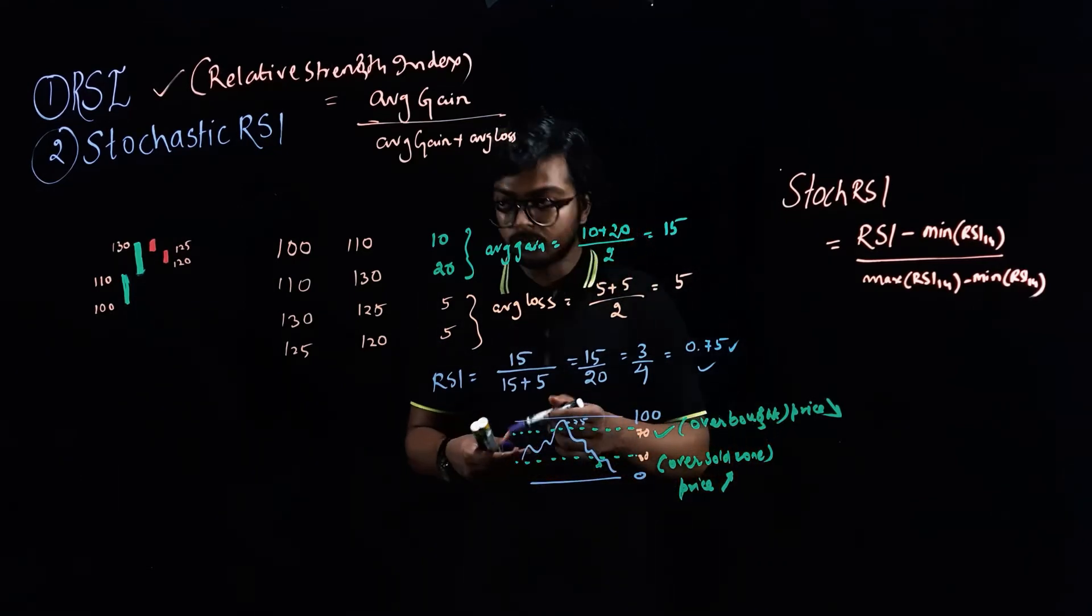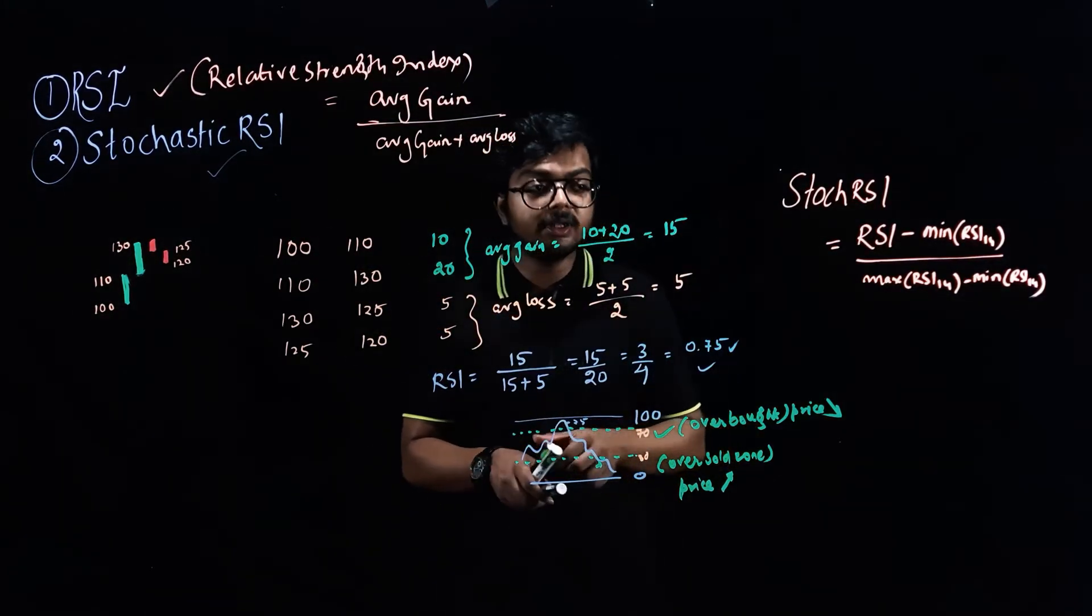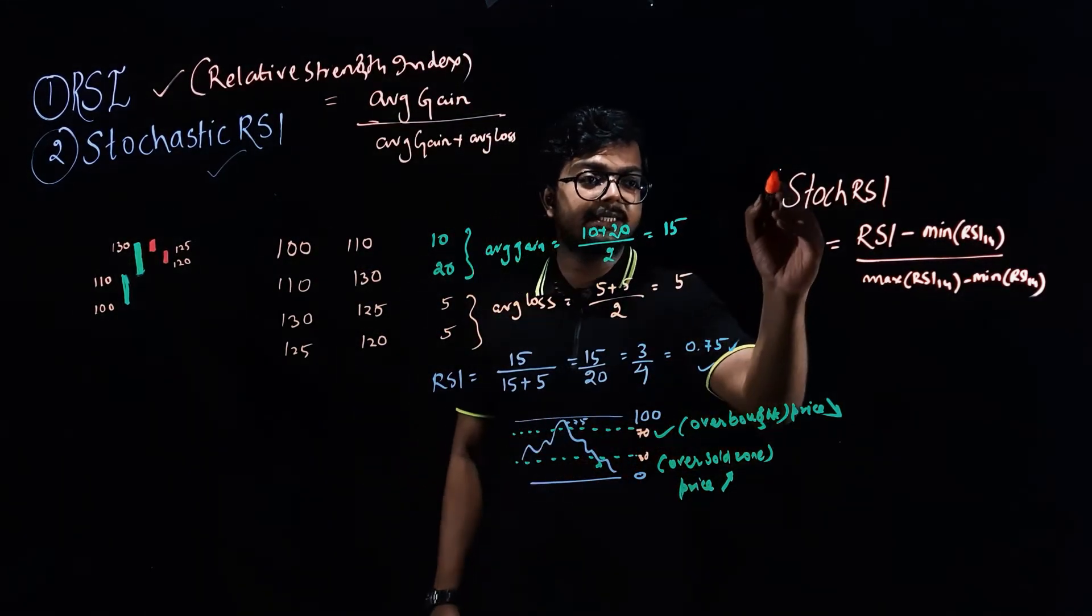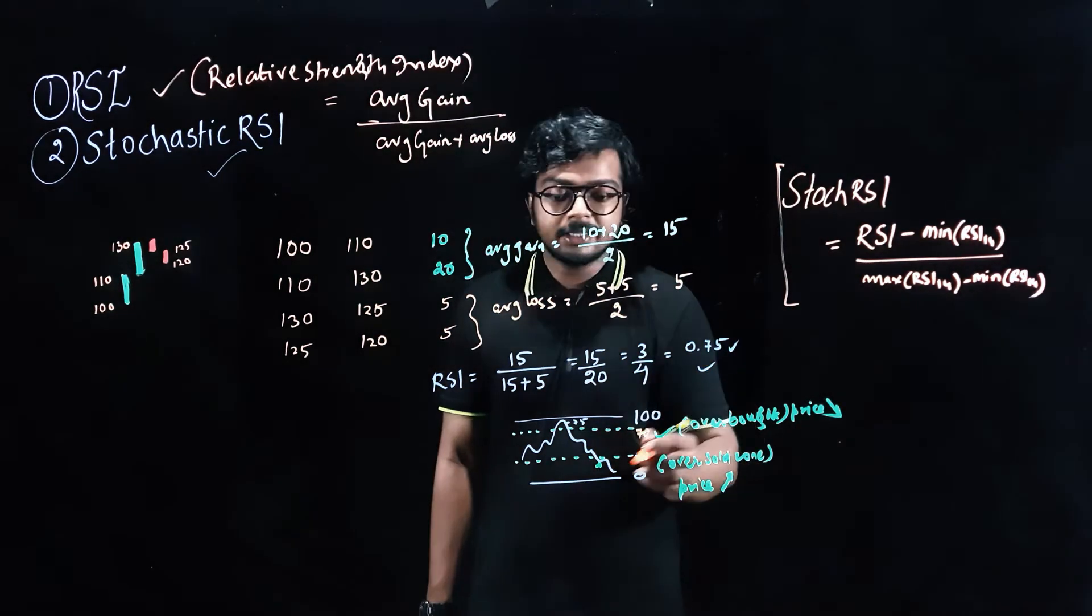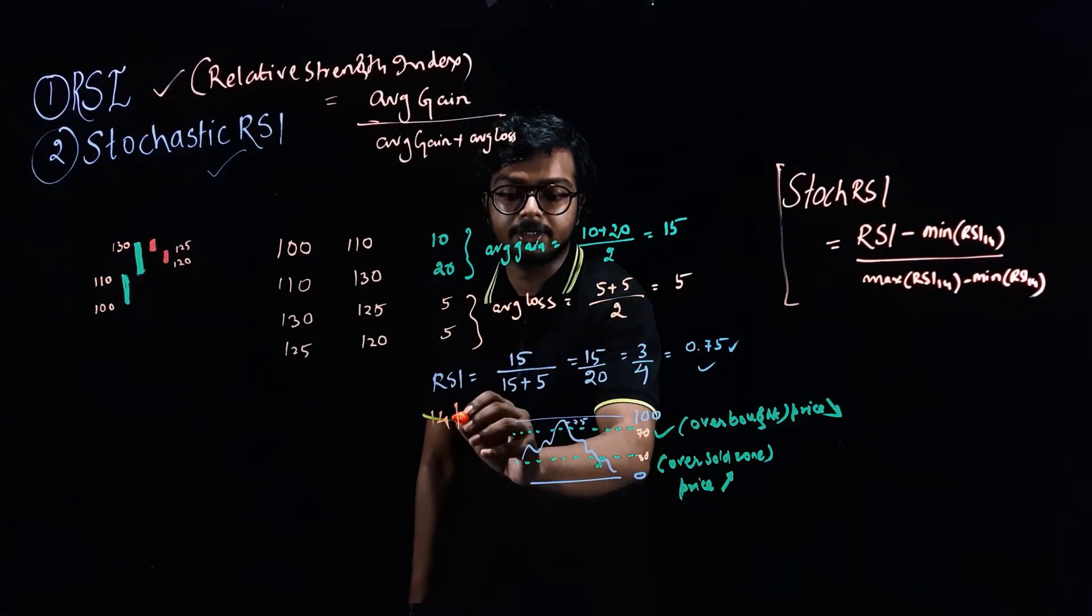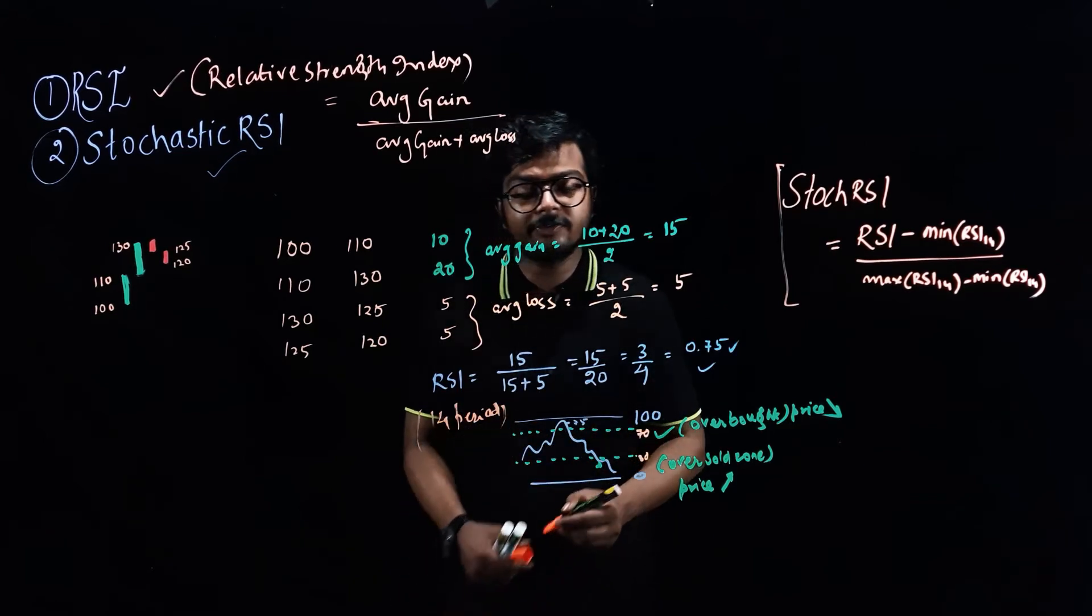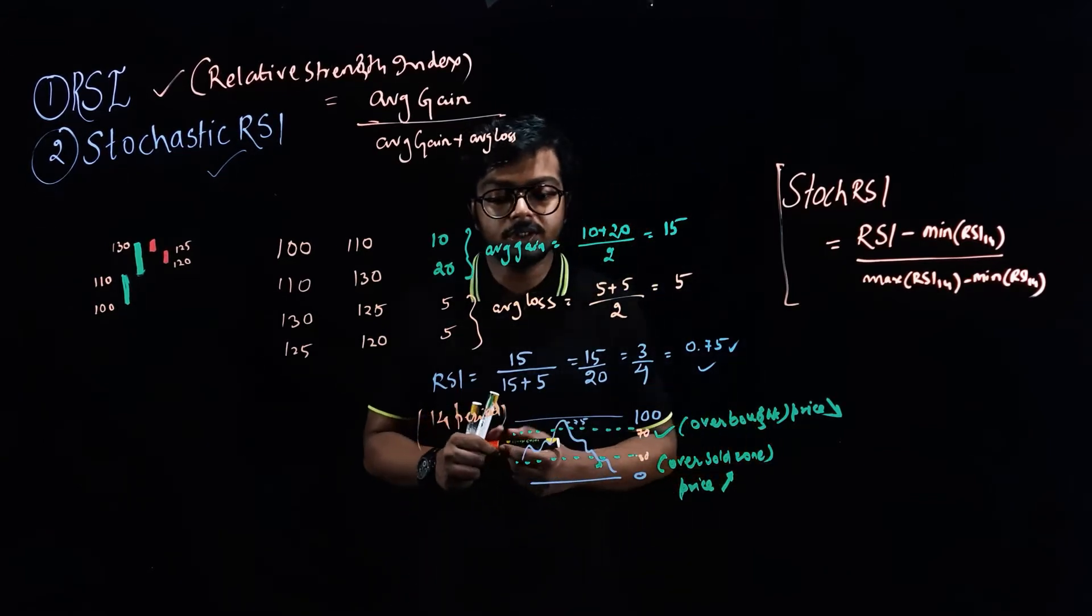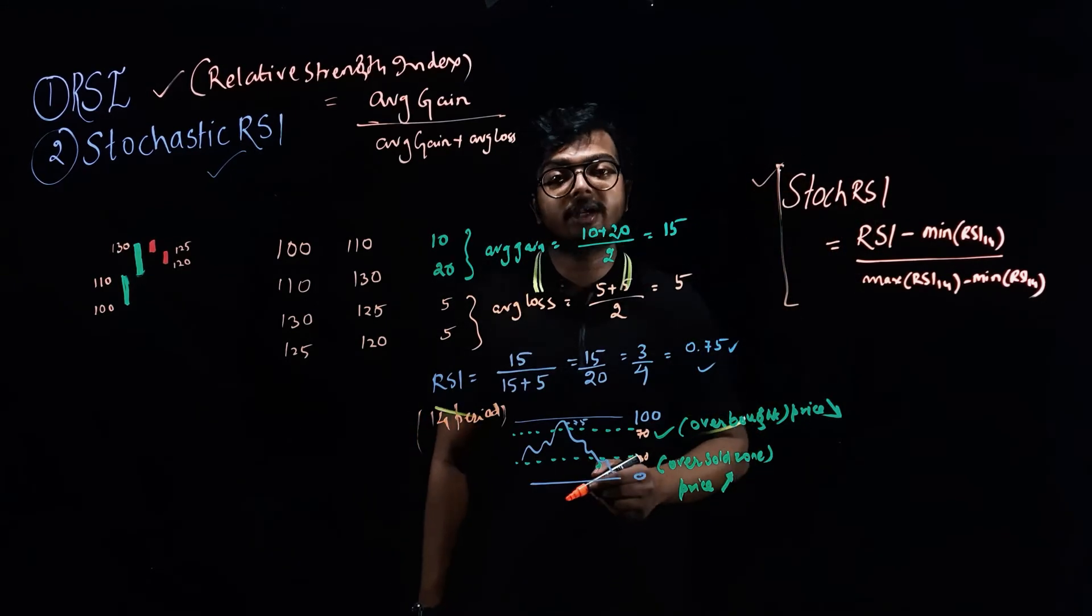Now similar to RSI, we also have a Stochastic RSI. The formula to calculate the Stochastic RSI is this one. So here I forgot to mention one thing: that RSI is computed generally over 14 period. You can use other periods but 14 period is pretty good. You can try it out. Now let us see what exactly is Stochastic RSI.